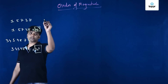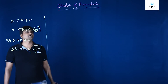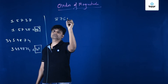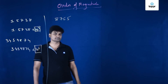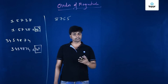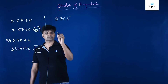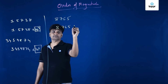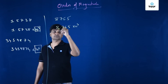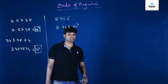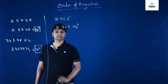Let us take another number: 8,765. Calculate the order of magnitude. Applying the same rule — one digit before the decimal point — we get 8.765 × 10^3. So you might say the order of magnitude is 10^3.